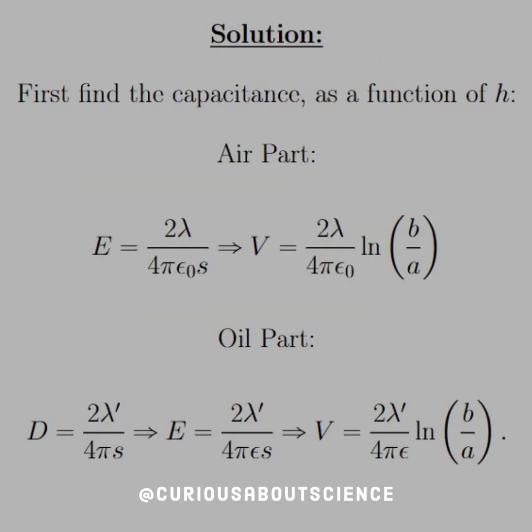For our solution, our first step is to find the capacitance as a function of the height h. If we use a Gaussian surface for each of the cylinders, we know that the air part leads to an electric field of 2 lambda over 4 pi epsilon naught s.